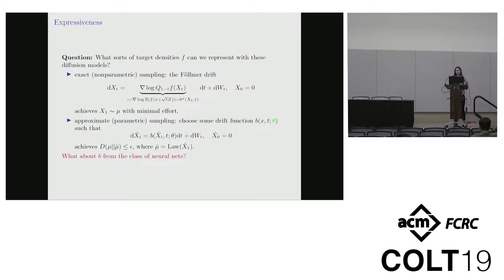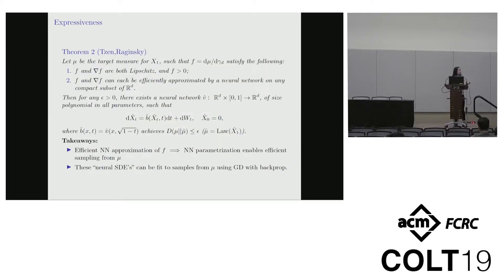So to that end, consider both the exact but nonparametric Föllmer drift, which gives you the target with minimal control effort by time one. And on the other hand, some approximate parametric scheme that gets you to within epsilon and KL of the target law by time one. So naturally, if we think about the control as drifts taken from the class of neural nets, we should be able to represent, say, the Föllmer drift quite efficiently and get to within epsilon of the target by time one. Because neural nets can represent almost everything, as we've all heard.